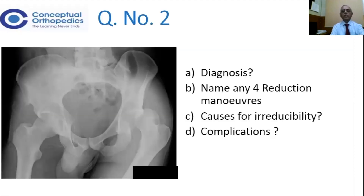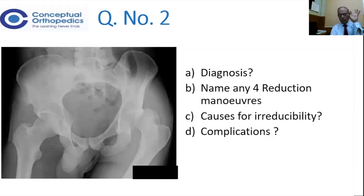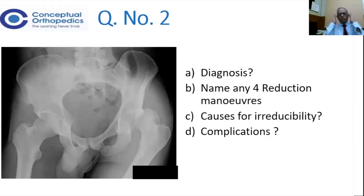Now we go to question number two. What is the diagnosis? Keep it in your mind so that you cultivate the habit of immediately identifying what it is. There may be four reduction maneuvers. Once you are diagnosing, what are the reduction maneuvers? And if you are not able to reduce it, what are the causes of irreducibility?